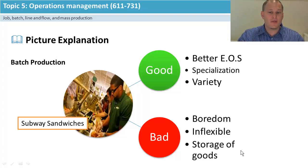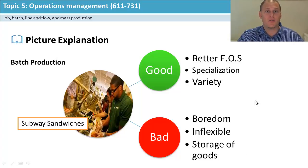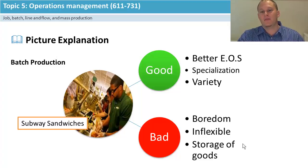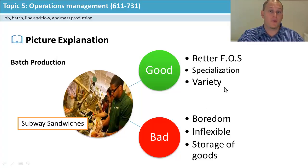Most importantly, storage of goods is a disadvantage. Because you have different variety parts, you have to store that stock, and storage decreases your useful production space. This means more costs are added — so if you want variety, you're also going to have storage costs.